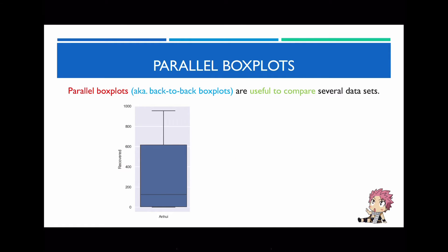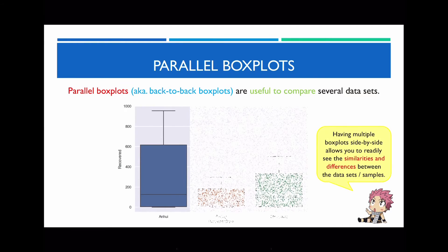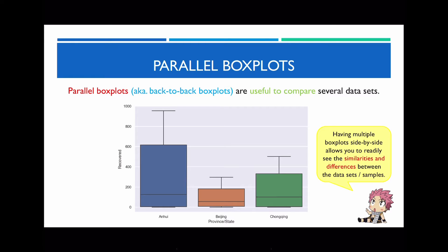The reason why we draw parallel box plots is because it's very useful to actually compare several data sets. For instance, I've got a box plot for a particular city or state in China — Anhui — showing the number of cases where people recovered from the COVID-19 pandemic. However, that's just one single box plot, so it's not considered parallel. When we draw box plots for the different states or cities within China, including Beijing and others, having them side by side makes it really easy to see the similarities as well as the differences between these three data sets.